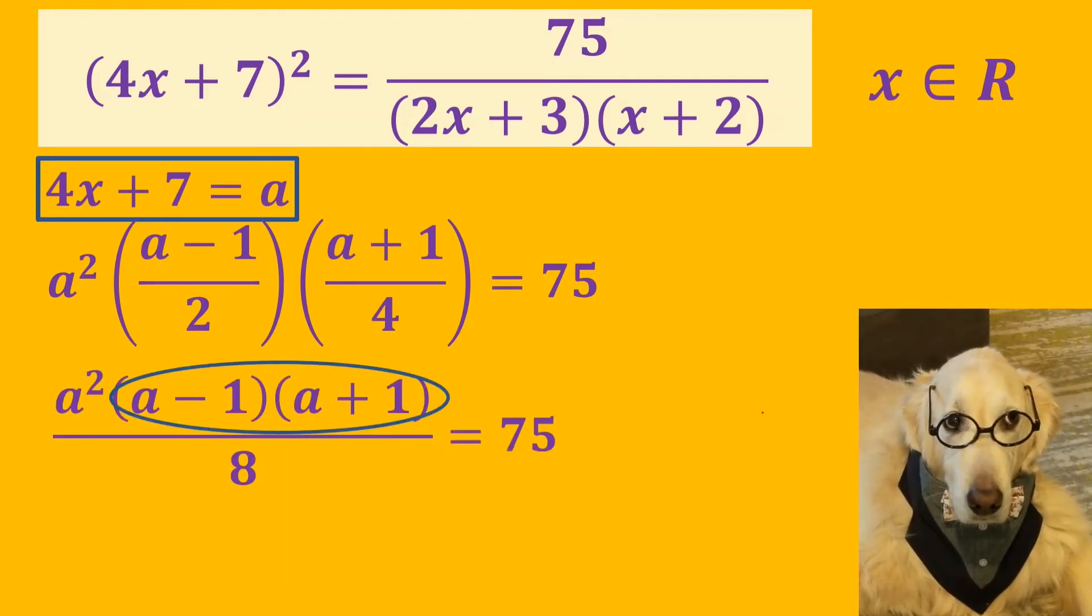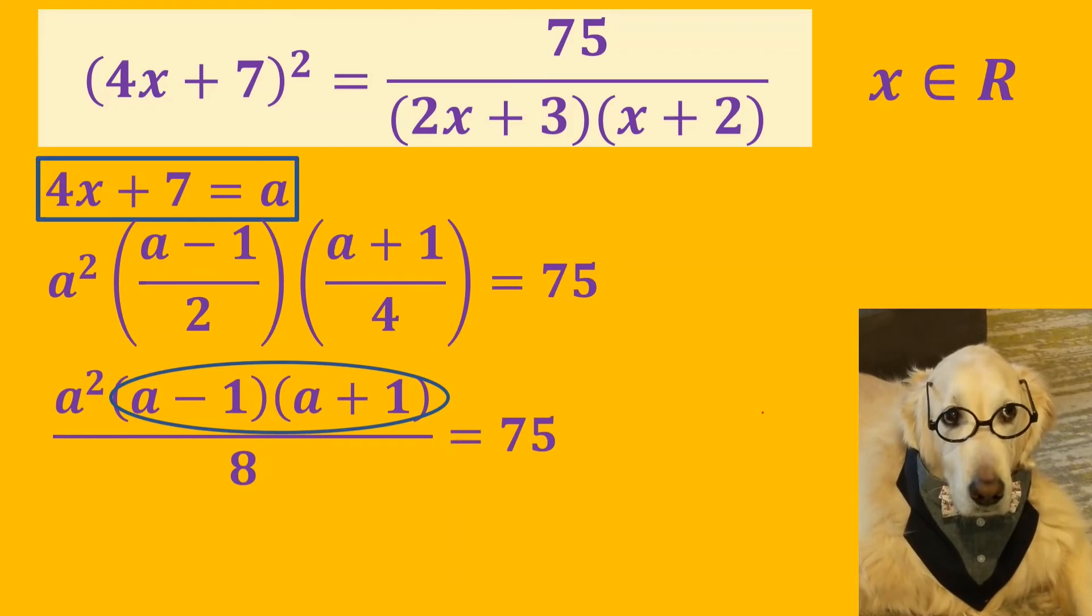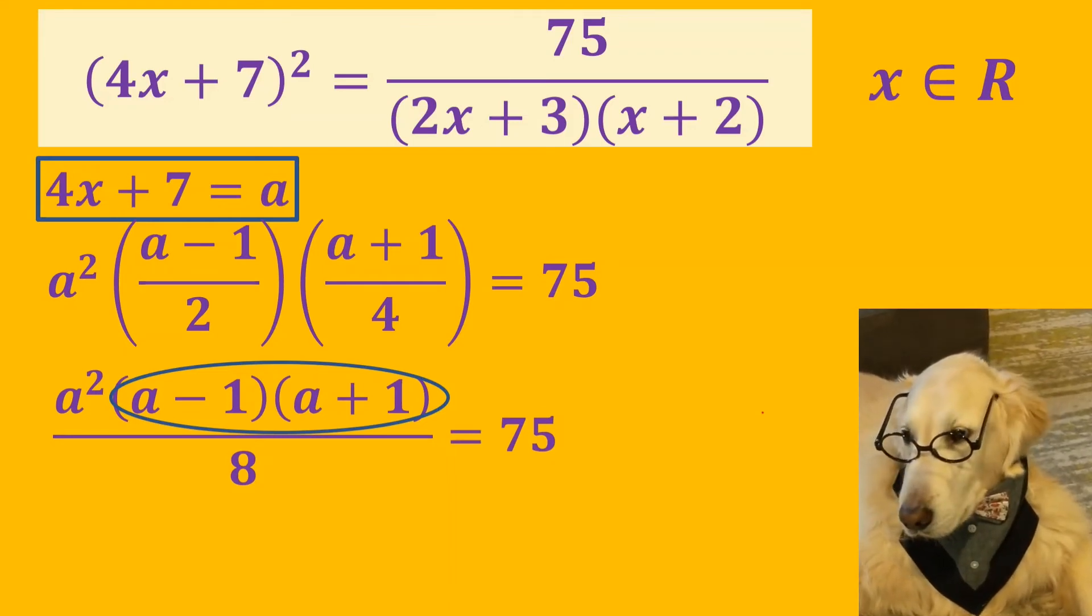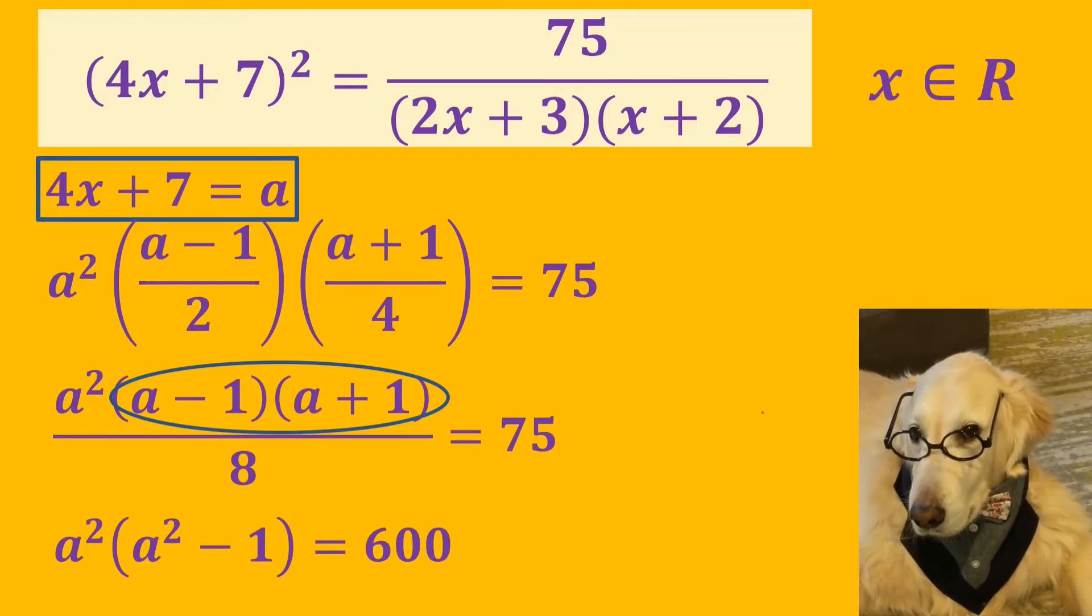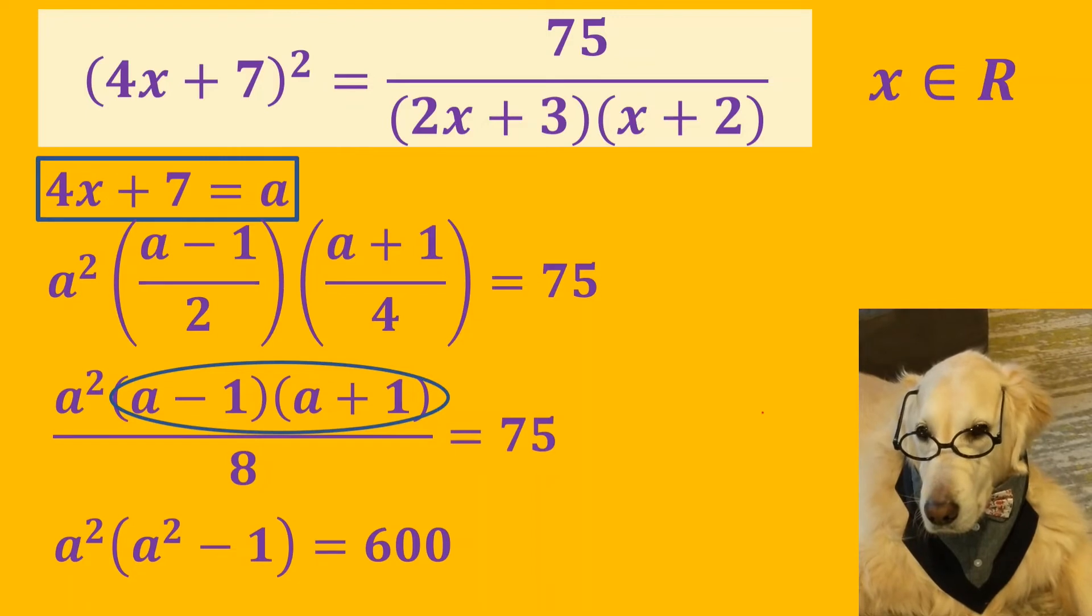Do you notice the difference of squares here? We can write a² - 1 instead of (a - 1)(a + 1).